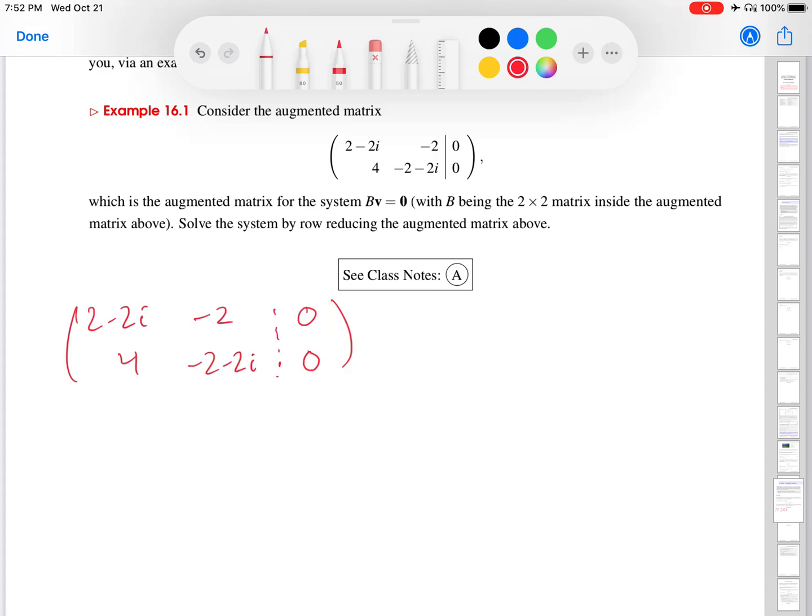But the objective is a little different. Now that we have these complex numbers in there, we still want to make this number one. So our objective is still as before to make this one zero and then work on the second column and make this zero one so we can solve the system. This is that Gauss-Jordan elimination process that we talked about in the very first lesson in the linear algebra unit of the course. So that's still our objective.